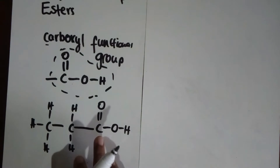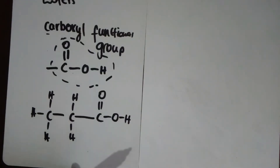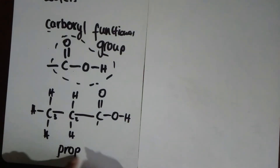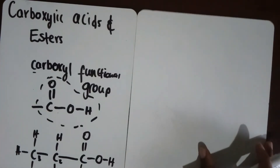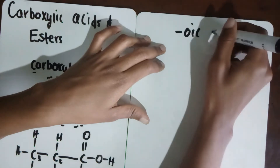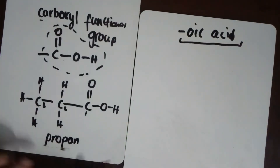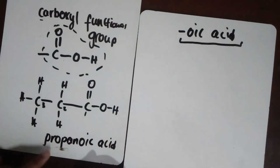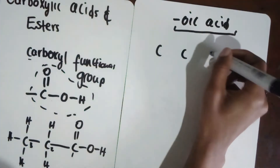How do we name this particular compound? It's still pretty much the same — we first ask how many carbons do we have. We see three carbons, meaning it's going to be propane. Remember, 'prop-' as a prefix means three. But the interesting thing with carboxylic acids is that when you name them, the ending should always be '-oic acid' as your suffix. So with three carbons this compound is propanoic acid.